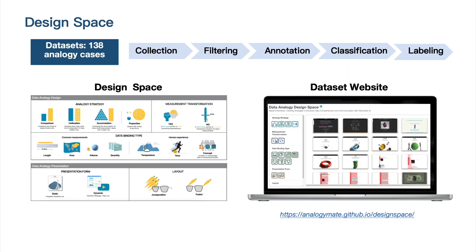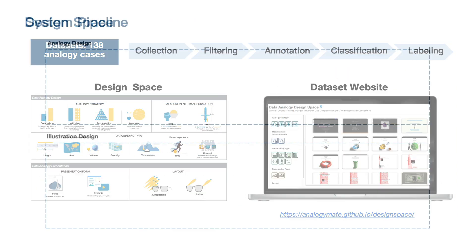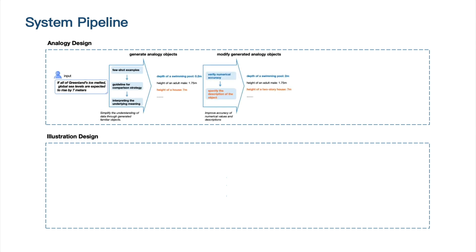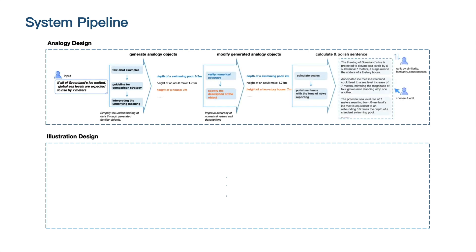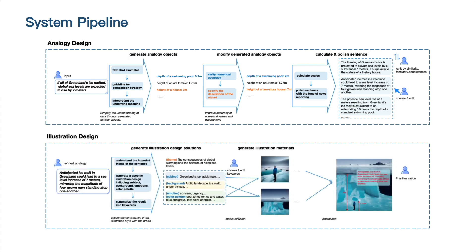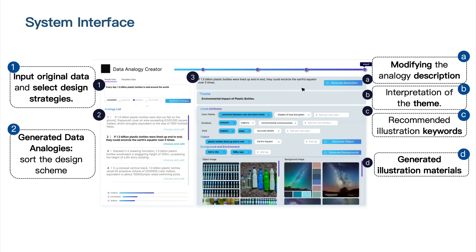In this work, we characterize a design space for data analogies. We also provide AnalogyMate, a supporting tool that automatically suggests data analogies, design solutions, and visual representations with generative AI. Users can make crucial decisions interactively at critical points throughout the creation process.